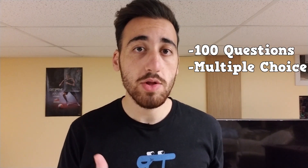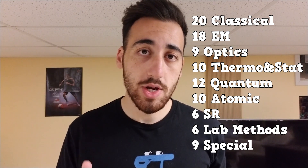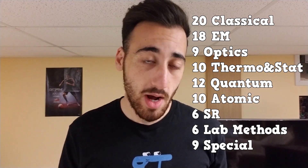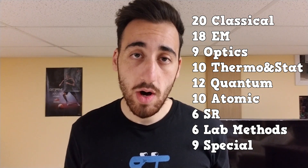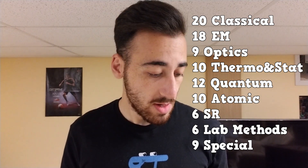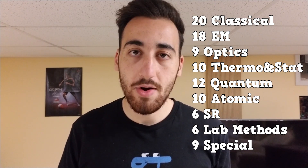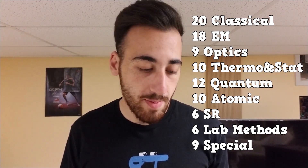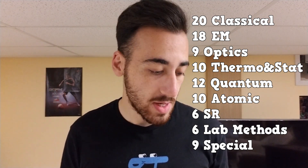So what's the structure of the physics GRE? It's a 100-question multiple-choice exam broken up into 20 questions on classical mechanics, 18 on electricity and magnetism, 9 on optics, 10 on thermal and stat mech, 12 on quantum mechanics, 10 on atomic physics, 6 on special relativity, 6 on lab methods — stuff like error analysis, lasers, optical equipment, and statistics — and finally 9 questions on special topics, which include nuclear physics, particle physics, astronomy, cosmology, and condensed matter.